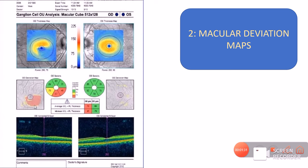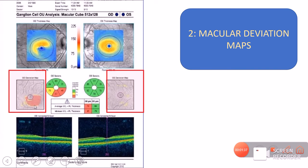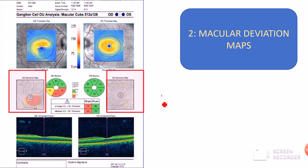Just like the RNFL deviation maps, the color coding of the macular thickness deviation maps is the opposite of the thickness maps. A red zone in the deviation map means that thickness is present in less than 1% of the population — these are the dangerous zones. In this example, the thickness map showed bluish color, and in the deviation map we see a reddish zone, confirming this falls under the category where only 1% of the population would have such thickness — indicating abnormal thinning.